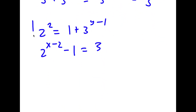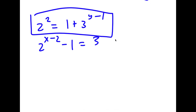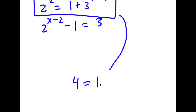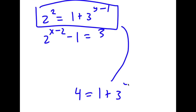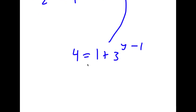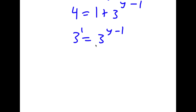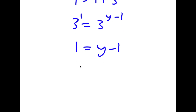Solving the first equation: 2 squared is 4, so 4 equals 1 plus 3^(y-1). Subtracting 1 from both sides gives 3 equals 3^(y-1). Since 3 equals 3^1, and the bases are the same, y minus 1 equals 1, meaning y equals 2.